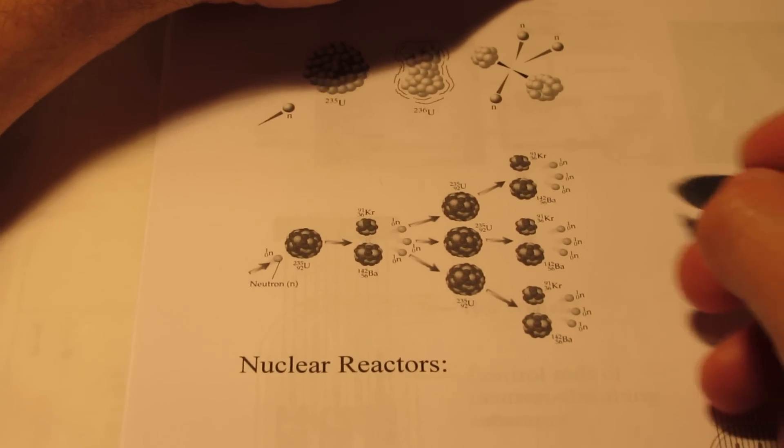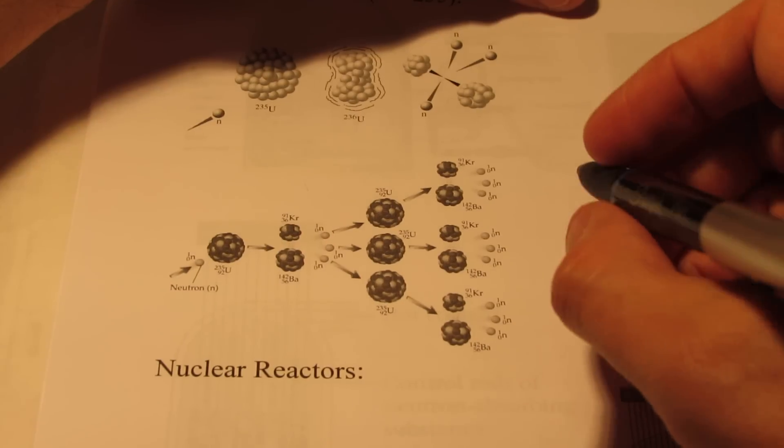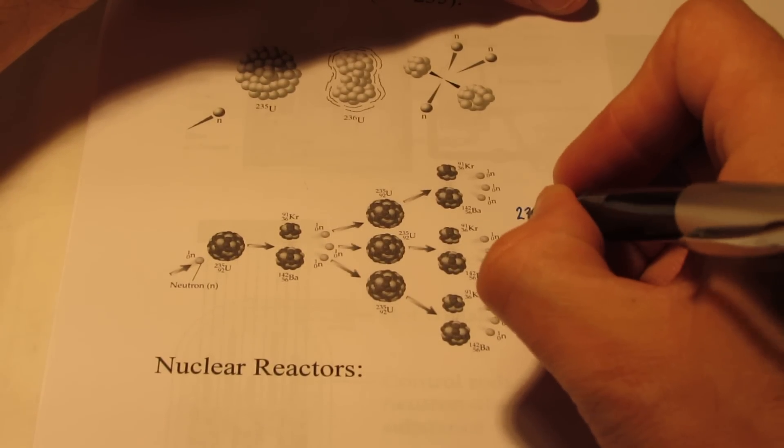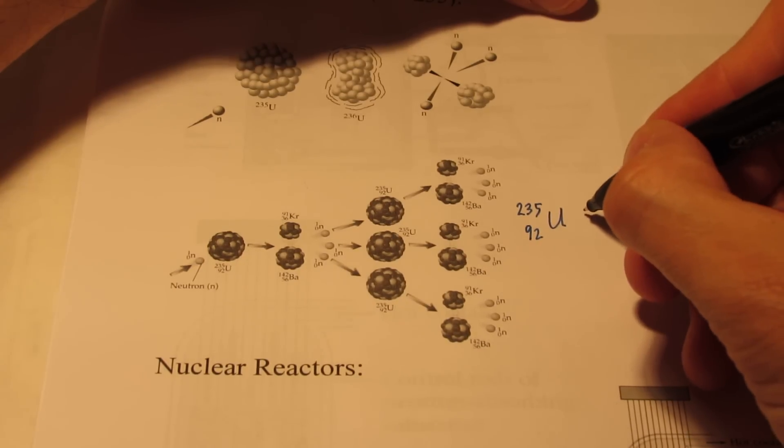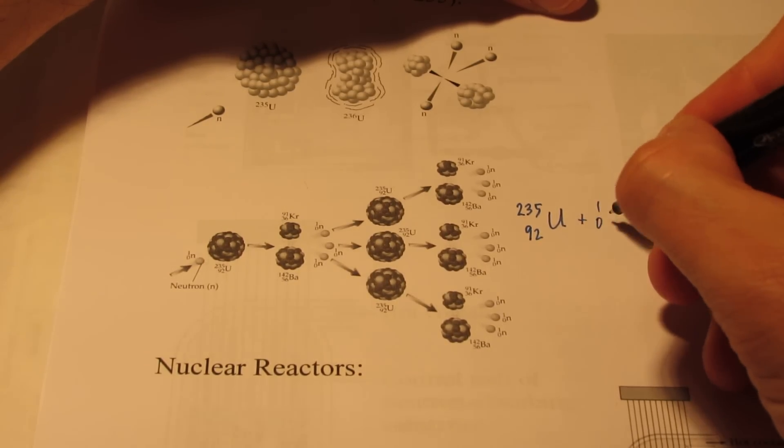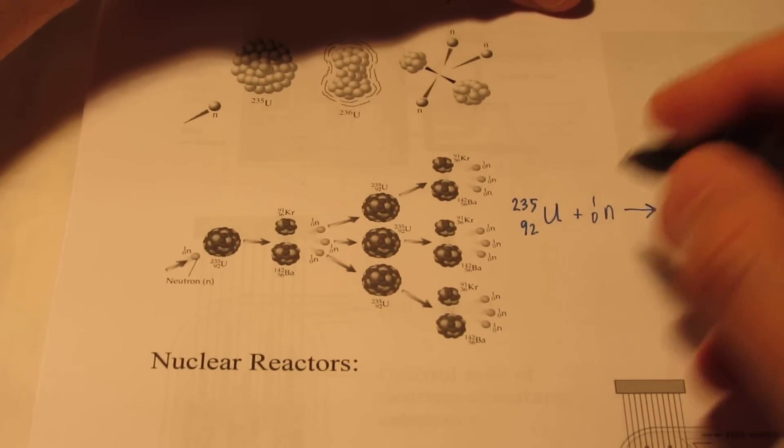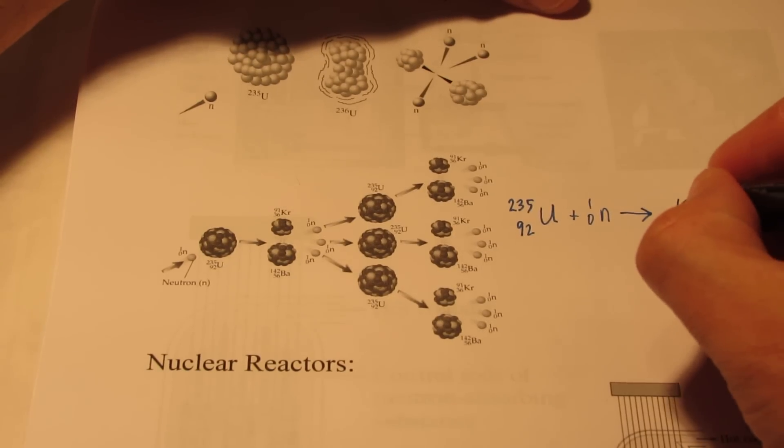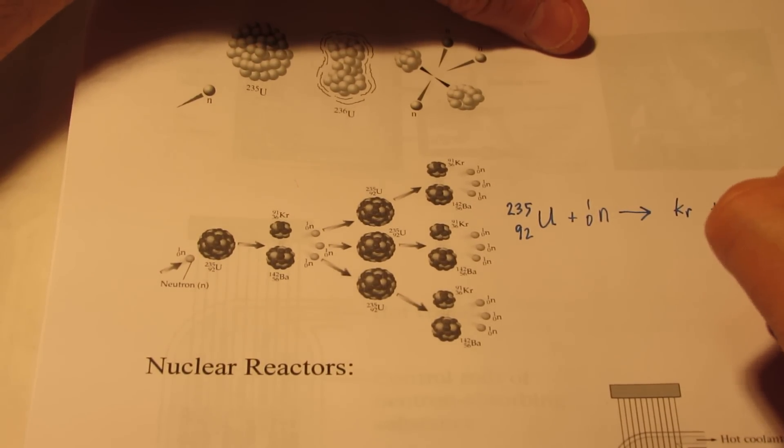Now let's just write this reaction off to the side so you guys can get a feel for what's happening. So once again, we have uranium-235, that's its mass number, atomic number 92. And of course we are going to slam into it with a neutron. In the process, we're going to split that uranium-235 atom into krypton and into barium.